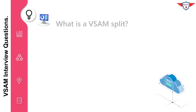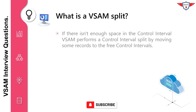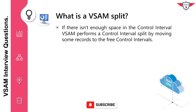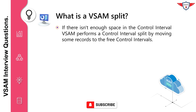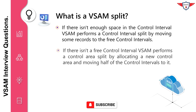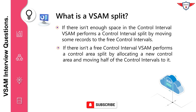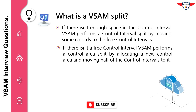What is a VSAM split? If there isn't enough space in the control interval, VSAM performs a control interval split by moving some records to the free control intervals. If there isn't a free control interval, VSAM performs a control area split by allocating a new control area and moving half of the control intervals to it.